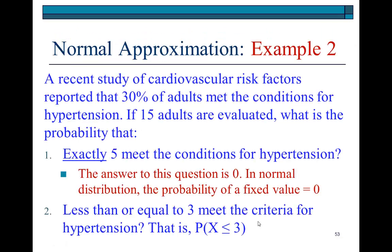Here's a second example. It says, a recent study of cardiovascular risk factors reported that 30% of adults met the conditions for hypertension. If 15 adults are evaluated, what is the probability that exactly 5 of them meet the conditions for hypertension? This is a trick question because the answer is zero. Remember, in normal distribution, the probability of a fixed value is always zero. Normal is continuous, and so we cannot obtain a probability for a specific point, for a specific value. It has to be a range of values.